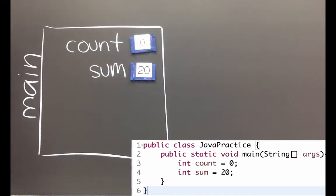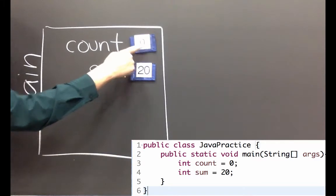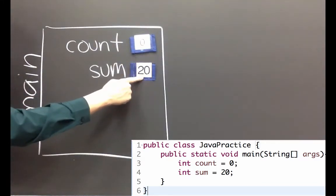Okay so here's a stack frame for our main method, that's the method that runs when we run our class. In that simple main method I've given it two int variables: count which I set to zero, and sum which I set to 20.